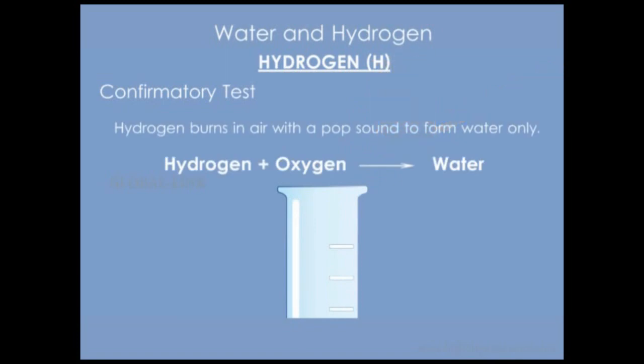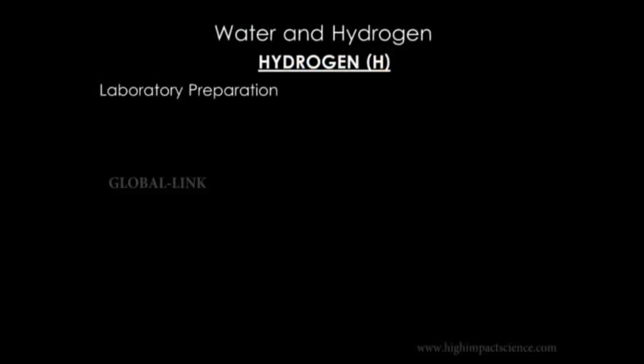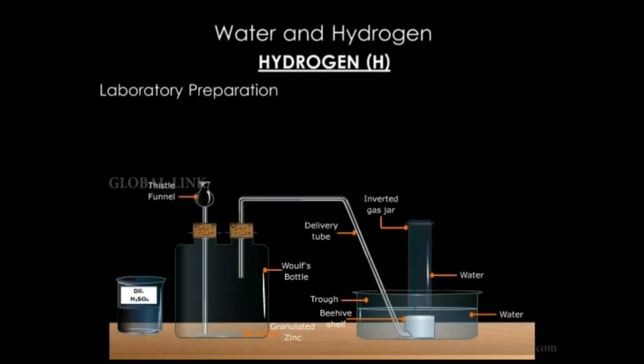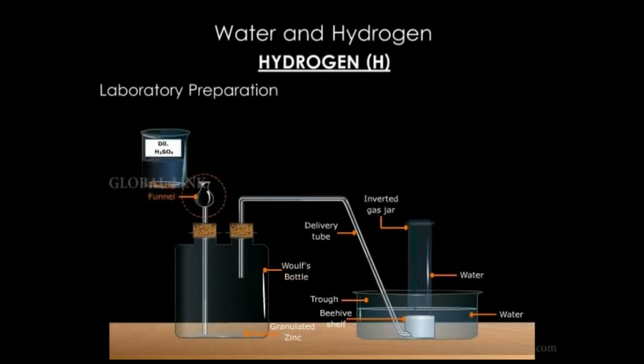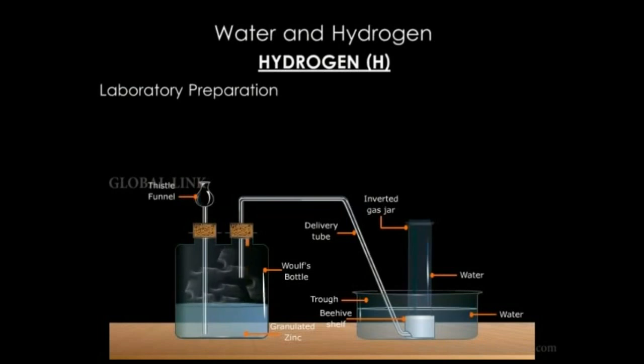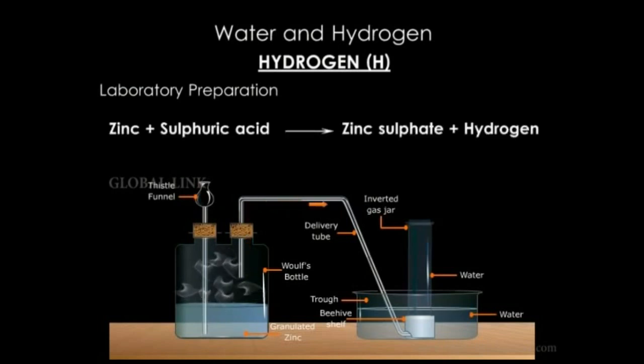Hydrogen gas is prepared in the laboratory by reaction of zinc granules and dilute hydrochloric acid or sulfuric acid. The apparatus setup is as shown here. The zinc granules are placed into a Woulfe bottle. Dilute sulfuric acid is added to the granules through the thistle funnel. A reaction takes place and hydrogen gas is liberated. The gas is collected in the jar by downward displacement of water.